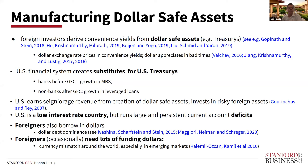There's also evidence that the dollar exchange rate actually prices in these convenience yields. For example, in bad times, when there's more demand for dollar safe assets, the dollar appreciates. The Treasury is not the only one who manufactures safe assets. In some sense, the U.S. financial system is also in the business of trying to create substitutes for Treasuries and catering to this demand, though these are not perfect substitutes.